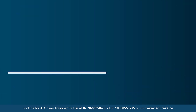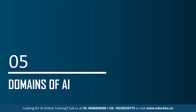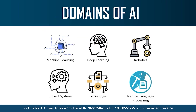Moving on to the last topic: the different domains or branches of artificial intelligence. AI can be used to solve real-world problems by implementing machine learning, deep learning, natural language processing, robotics, expert systems, and fuzzy logic. AI has also been applied in computer vision and image processing. Machine learning is the science of getting machines to interpret, process, and analyze data to solve real-world problems. Under machine learning, there's supervised, unsupervised, and reinforcement learning.